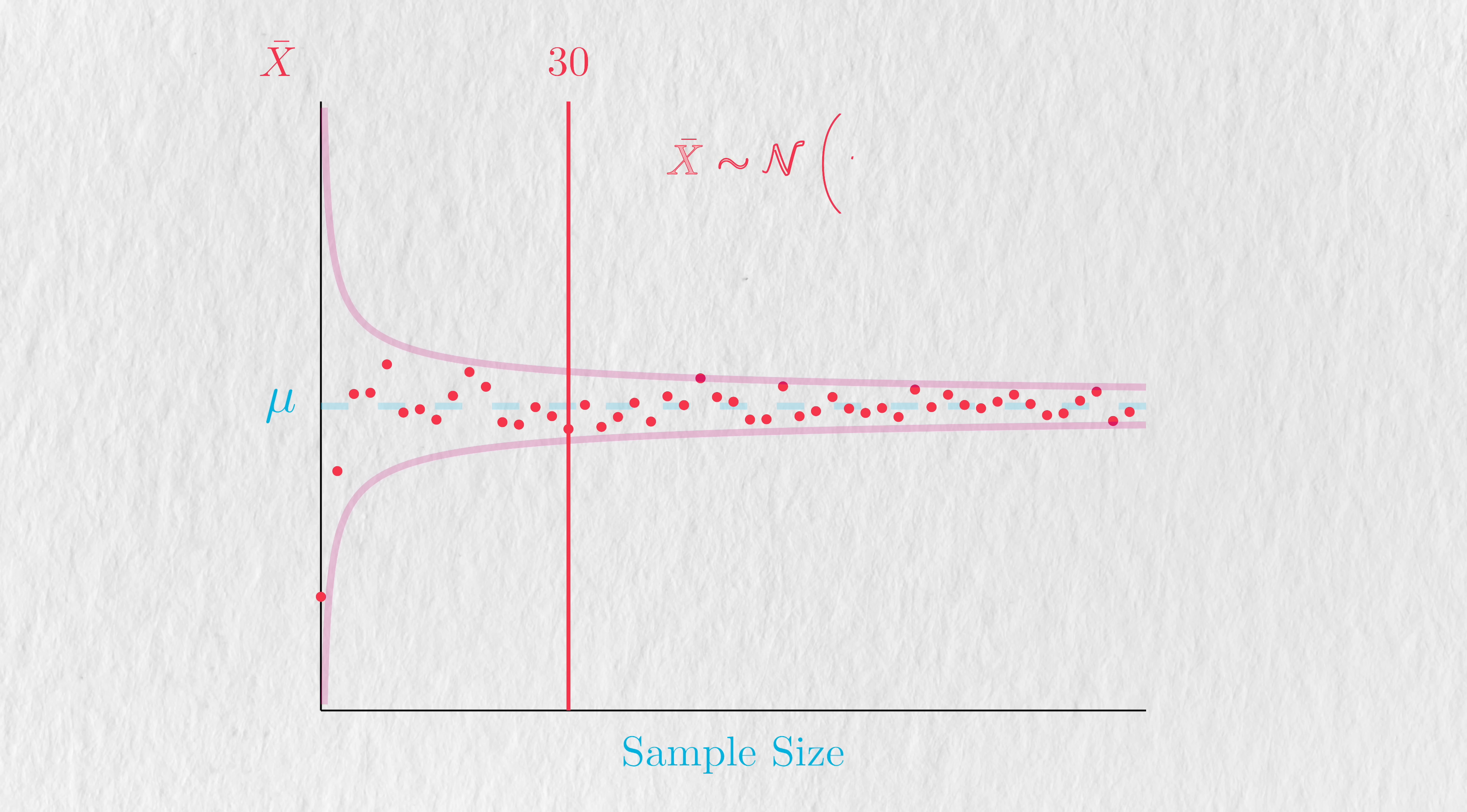At 30 samples, the variance of the sample mean is 1/30th of the original variance. But depending on the specific data we're working with, a 30-fold reduction may not be enough to get a precise estimate.